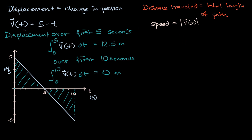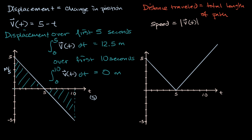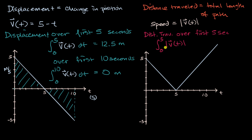If we plotted the absolute value of the velocity function, it would reflect the negative portion upward. To find the distance traveled, you find the integral over the appropriate time interval of the speed function. For the distance traveled over the first five seconds, that's the integral from zero to five of the absolute value of our velocity function dt. That area is 12.5 meters — the same as displacement here, because over the first five seconds the velocity is positive, so its absolute value is the same.